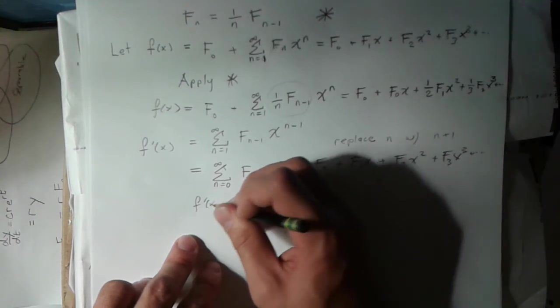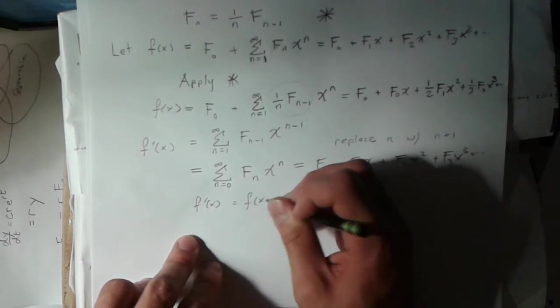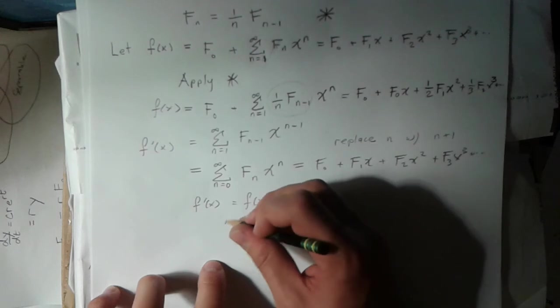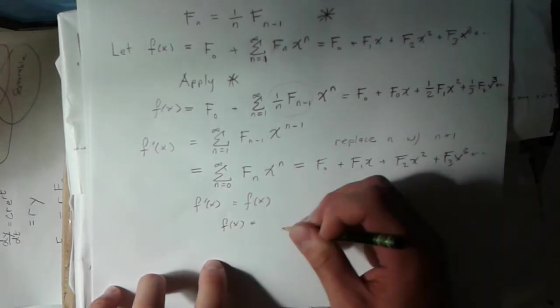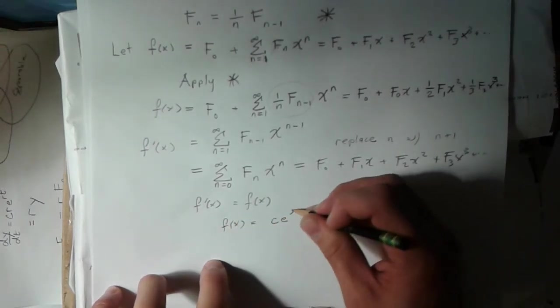f prime of x is equal to f of x. This is a differential equation. We know the solution. The solution is that f of x is equal to a constant times e to the x.